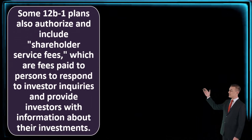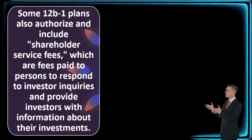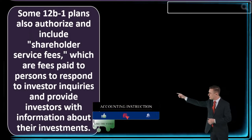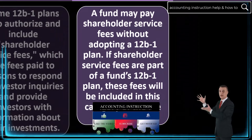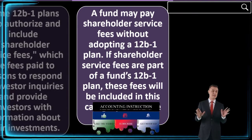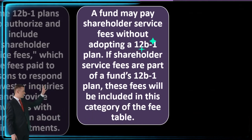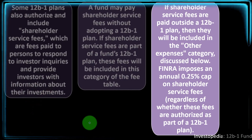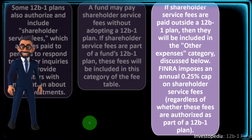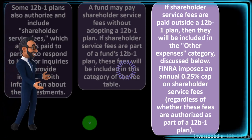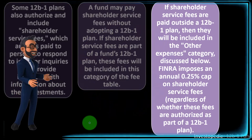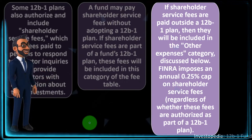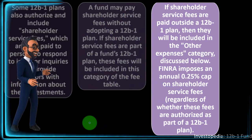Some 12B1 plans also authorize and include 'shareholder service fees,' which are fees paid to persons who respond to investor inquiries and provide investors with information about their investments. A fund may pay shareholder service fees without adopting a 12B1 plan. If shareholder service fees are part of a fund's 12B1 plan, they will be included in that fee table category. If paid outside a 12B1 plan, they will be included in the 'other expenses' category. FINRA imposes an annual 0.25% cap on shareholder service fees, regardless of whether they are authorized as part of a 12B1 plan.